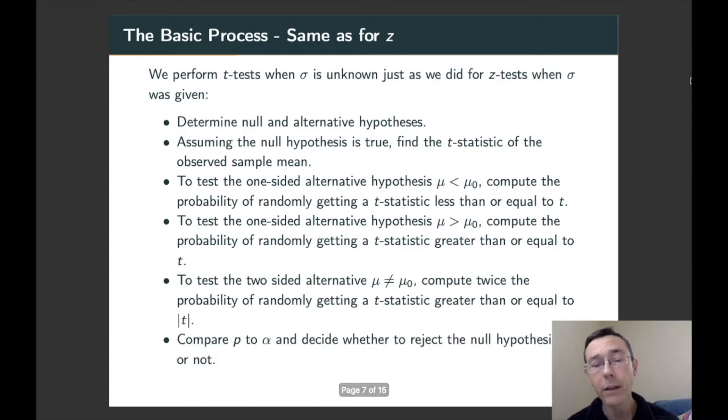Finally, once we've got a p-value, we're going to make a decision by comparing to our significance level alpha that we selected at the beginning of the problem.